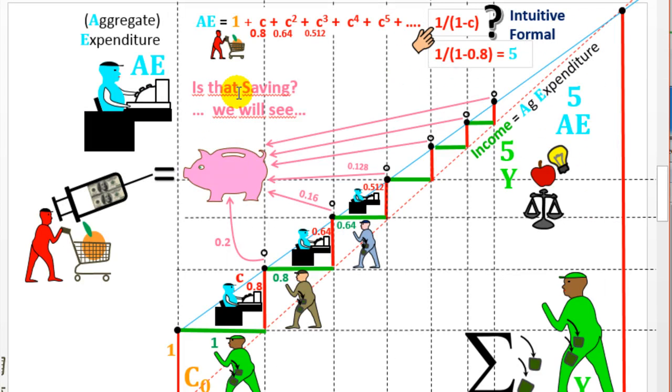In previous videos we saw that there are three ways that we can deduce this: intuitively, formally, and with mathematics.